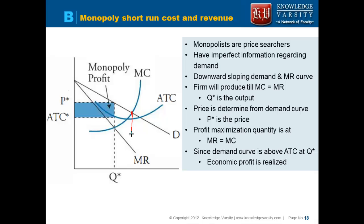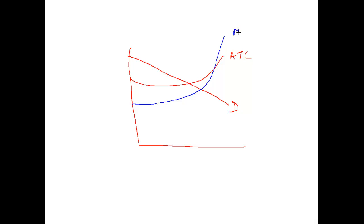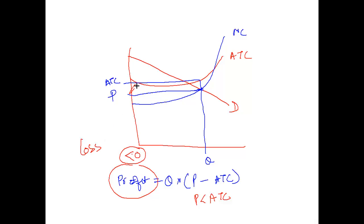Looking at the diagram: the marginal cost curve intersects the demand curve at a certain price and quantity. At that quantity, the average total cost is higher than the price. Profit equals quantity times price minus average total cost, but since price is less than average total cost, profit is less than zero — the firm suffers an economic loss. A firm will not produce if it is suffering an economic loss.